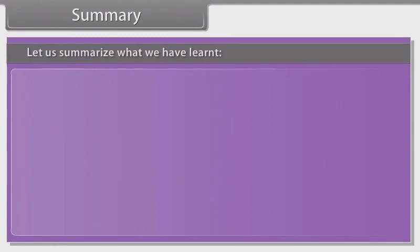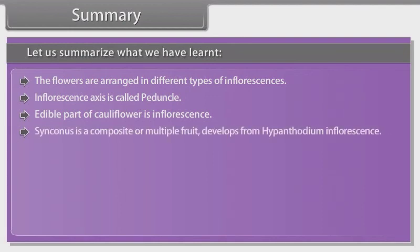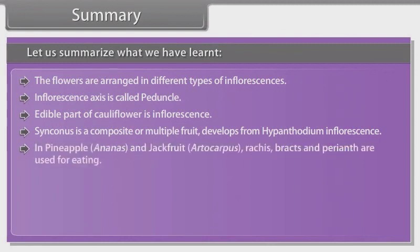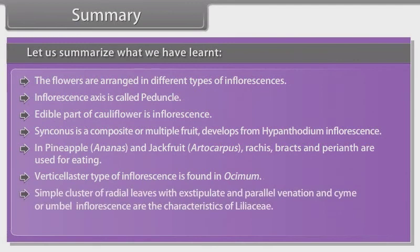Summary: Flowers are arranged in different types of inflorescences. The inflorescence axis is called the peduncle. The edible part of cauliflower is its inflorescence. Sorosis is a composite multiple fruit that develops from hypanthodium inflorescence; in pineapple (Ananas) and jackfruit (Artocarpus), the rachis, bracts and perianth are used for eating. Verticillaster type of inflorescence is found in Osmium. Simple clusters of radical leaves with exstipulate and parallel venation and cyme or umbel inflorescence are characteristics of the family Liliaceae. In the family Gramineae, the inflorescence is a spikelet.